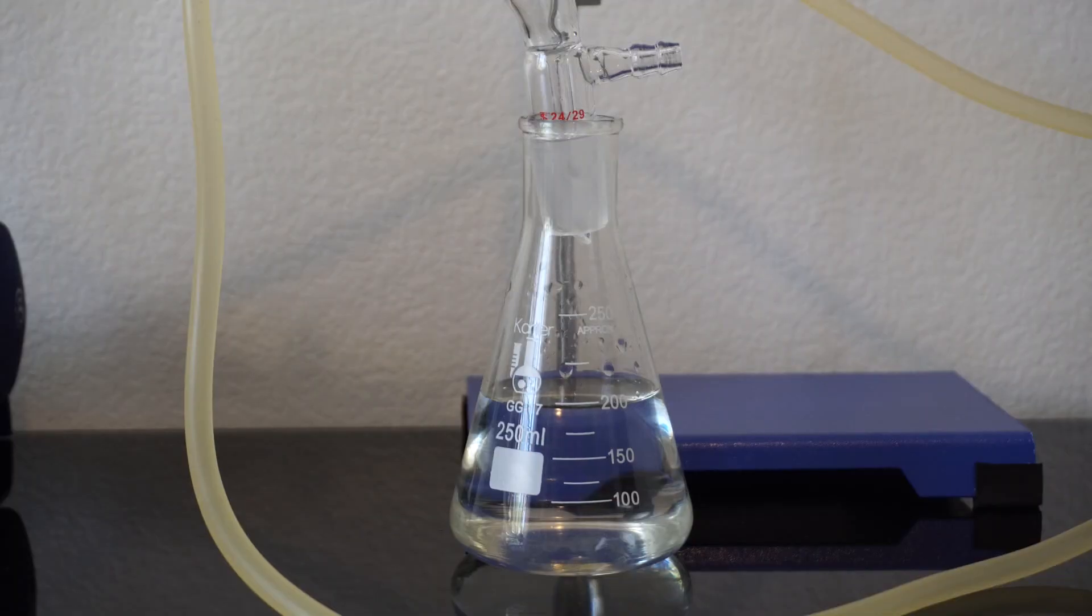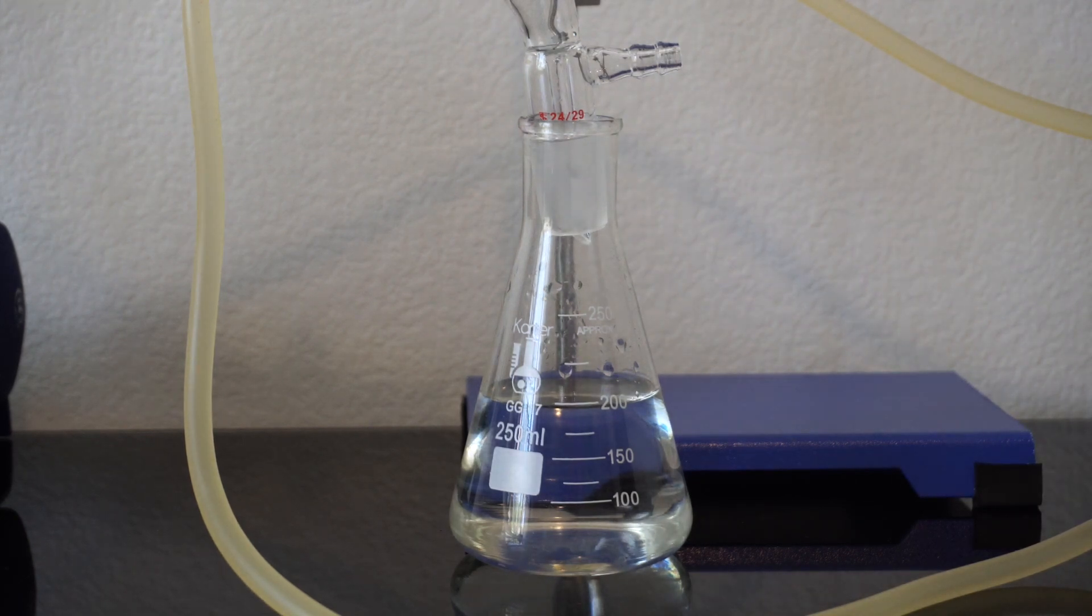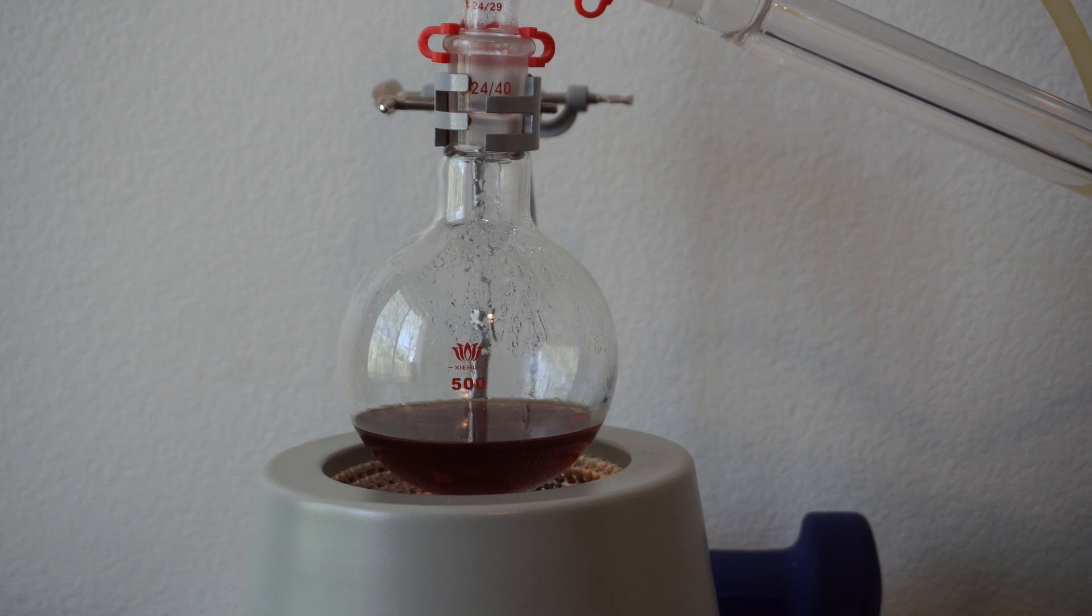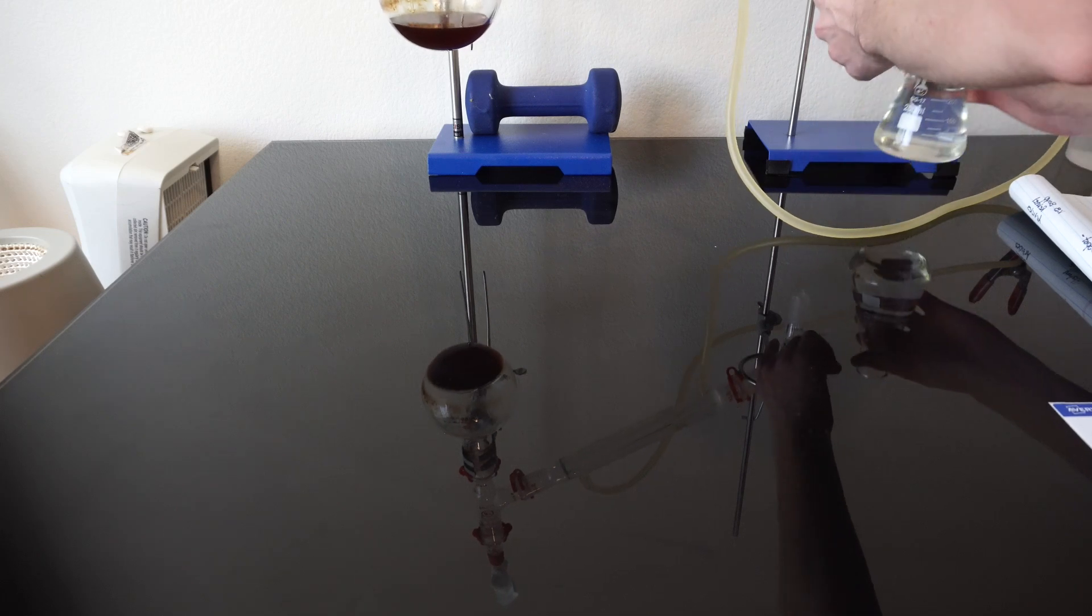When I feel the distillation is complete, we have about 225 milliliters in the receiving flask of rose water, which would leave about 100 milliliters in the boiling flask. We pour the rose water into the labeled container and seal it for future use.